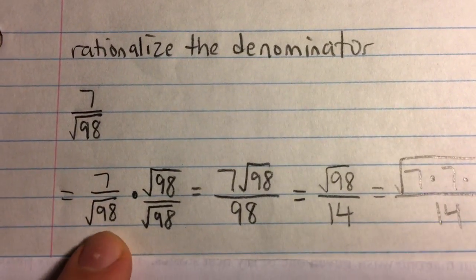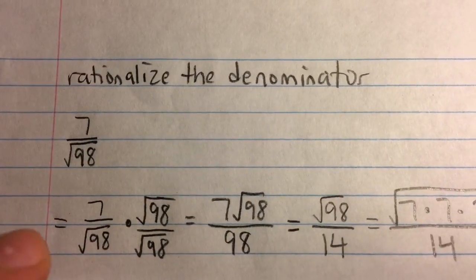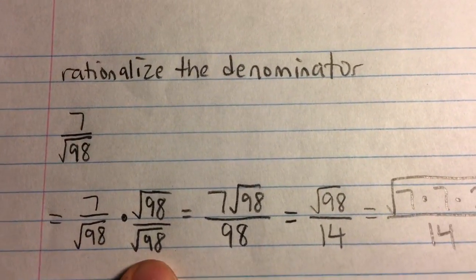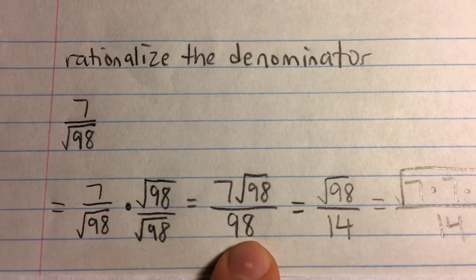And so to do that, how do we get rid of the square root? We're going to multiply by the exact same thing, the square root. Because if we have two square roots multiplied by each other, the two of the exact same thing, that's just going to be the number.